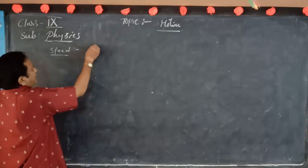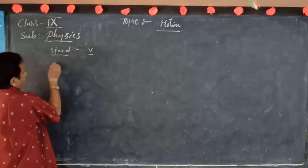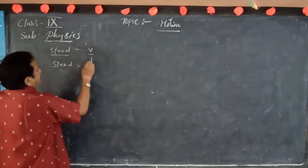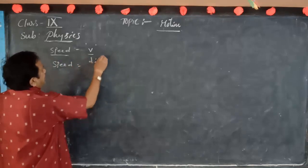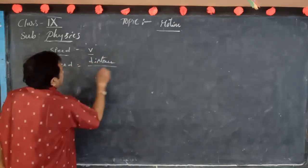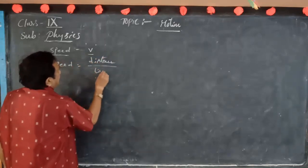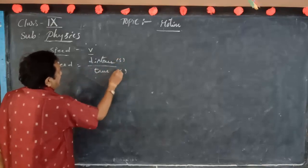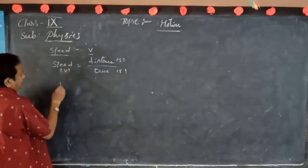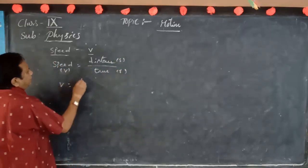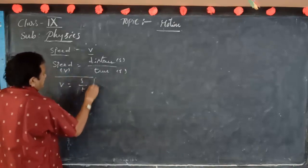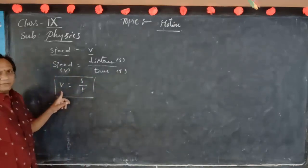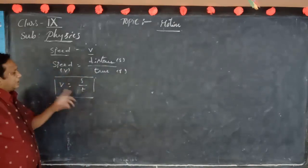Speed is denoted by the letter V. The formula is: speed V is equal to s by t, where distance is s and time is taken as t. This is an important formula.